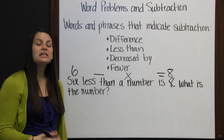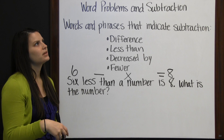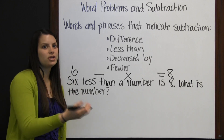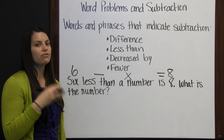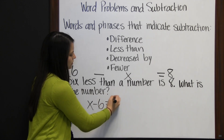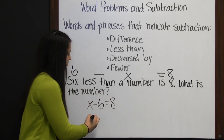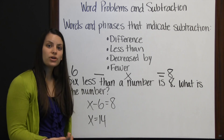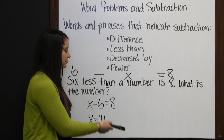So we have: x minus 6 equals 8. What number would I subtract six from to get eight? That number is fourteen. So x equals 14. If you didn't know the answer, you could solve algebraically by adding 6 to both sides, giving x equals 14, because 8 plus 6 is 14.